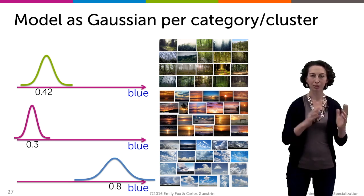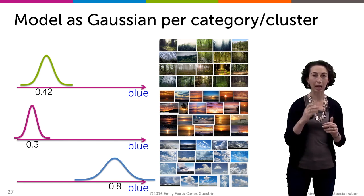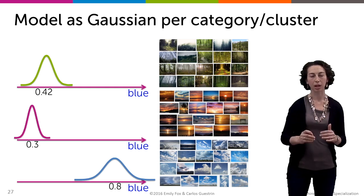Just to go back to what we were saying, we have a Gaussian per category: forest, sunsets, and clouds.